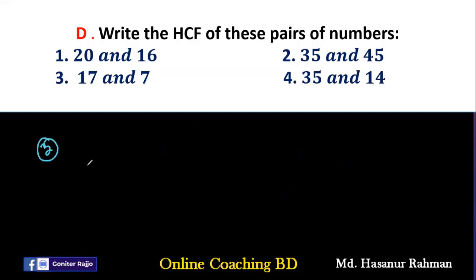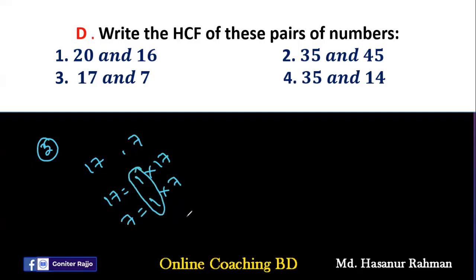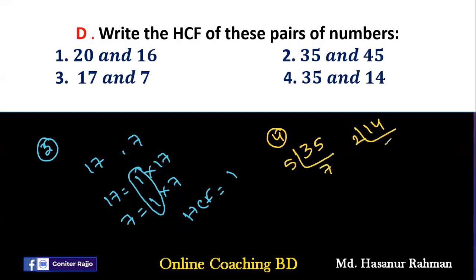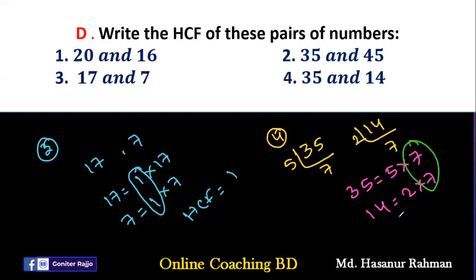Number 3 says 17 and 7. Both are prime numbers; a prime number has only 2 factors: 1 and itself. So 17 has factors 1 and 17, and 7 has factors 1 and 7. We only have 1 as the common factor, so HCF of 7 and 17 is 1. Number 4 says 35 and 14. Prime factors: 35 = 5×7 and 14 = 2×7. The common factor is 7, so HCF of 35 and 14 is 7.